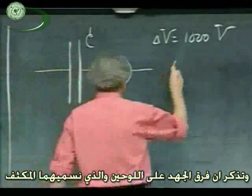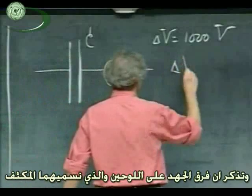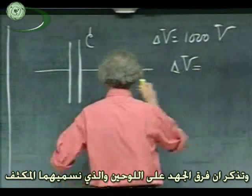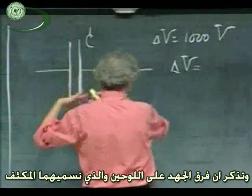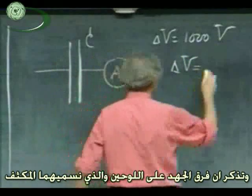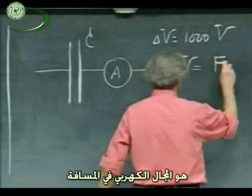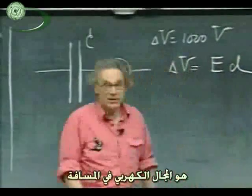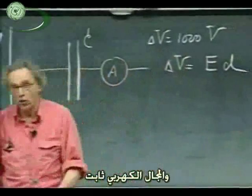Remember that the potential difference over the plates, which I now call a capacitor, is the electric field times the distance. And the electric field is constant.